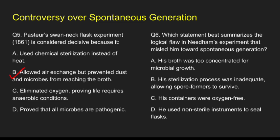Question 6: Which statement best summarizes the logical flaws in Needham's experiment that misled him towards spontaneous generation? Option A, his broth was too concentrated for microbial growth; Option B, his sterilization process was inadequate, allowing spore formers to survive; Option C, his containers were oxygen-free; Option D, he used non-sterile instruments to seal flasks. The correct answer is option B: his sterilization process was inadequate, allowing spore formers to survive.